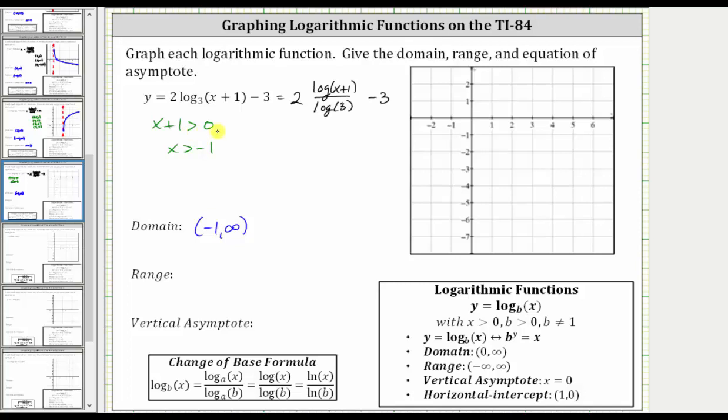If we set x plus one equal to zero, we can determine the equation of the vertical asymptote. Solving for x, we subtract one on both sides, giving us x equals negative one, which is the equation of the vertical asymptote.